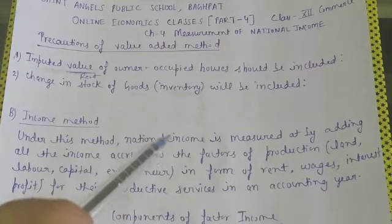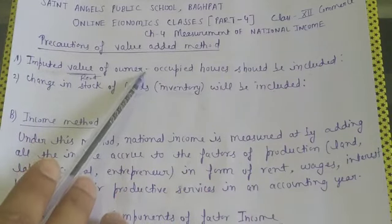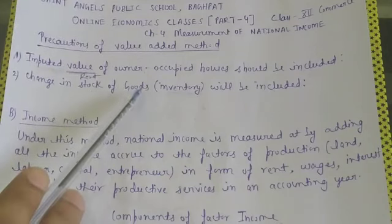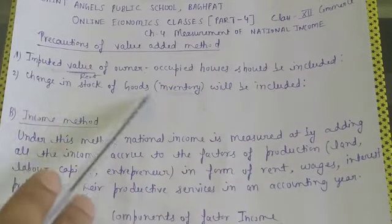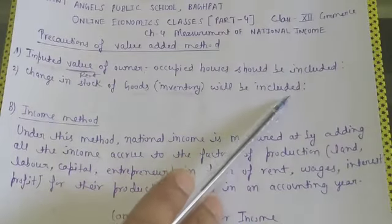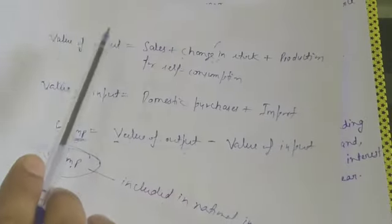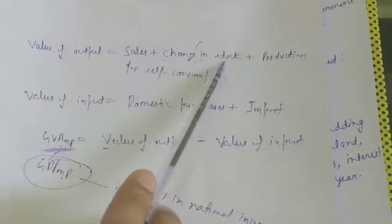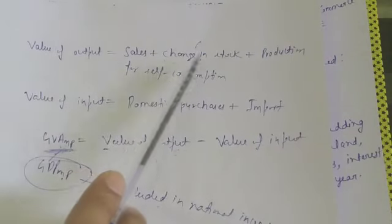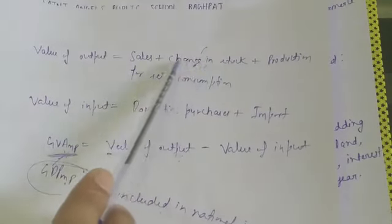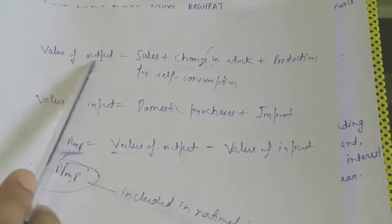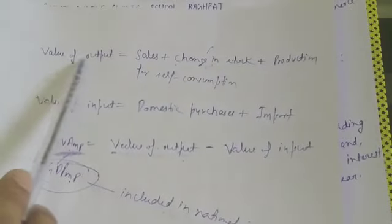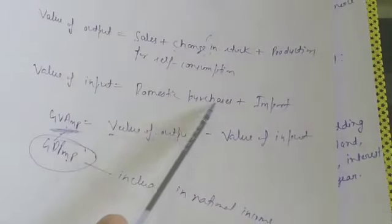The next point is: change in stock of goods — that is, inventories — will be included in national income. The formula of value of output is: sales plus change in stock plus production for self-consumption. This shows that change in stock is a part of value of output.